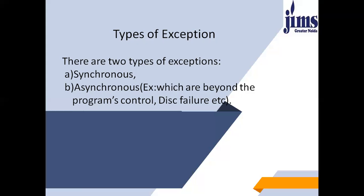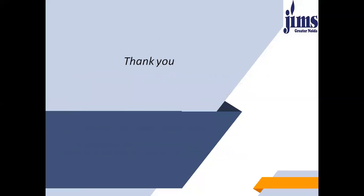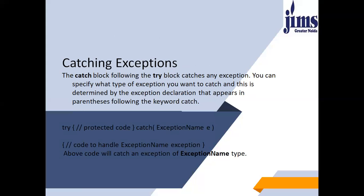Let me show you a simple example of exception handling in C++. You have to write try, then the protected code, then catch, then the name of the exception, and here you write the code to handle that exception. The above code will catch an exception of the specified exception name type.